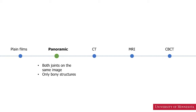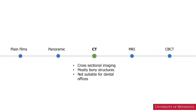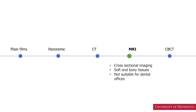The next technique is panoramic radiography. This is an excellent imaging technique to evaluate both the joints at the same time. The limitation of panoramic radiography is that it only shows the bony structures. We also have MDCT which shows cross-sectional views of the temporomandibular joints. The limitation of CT is that it mostly shows the bony structures. Because of the cost and the size of the machine, an MDCT unit is not suitable for most dental offices.